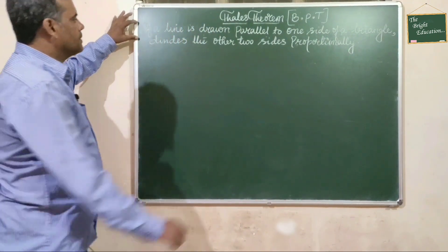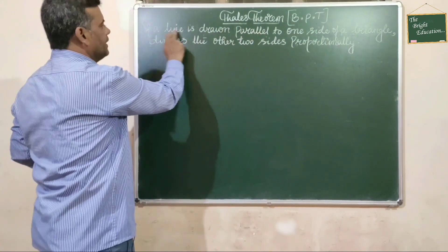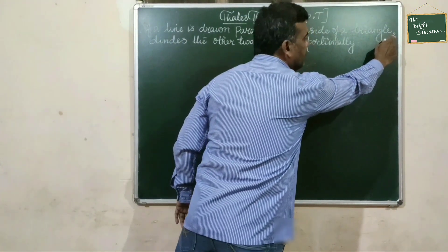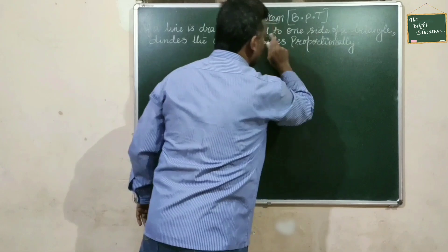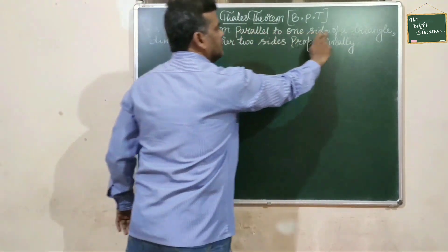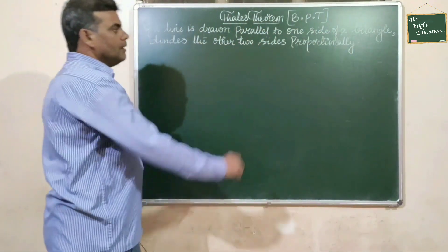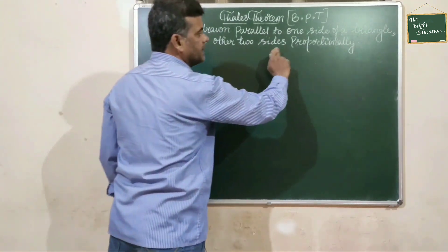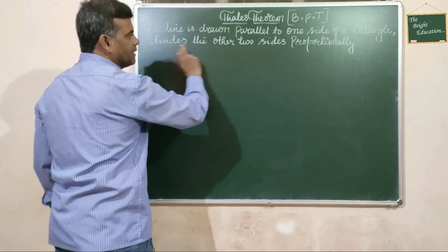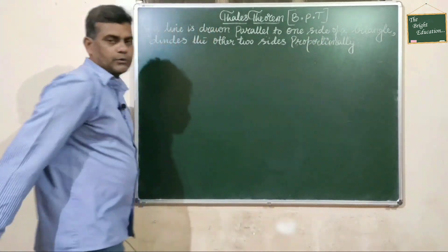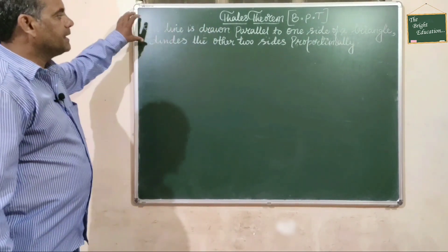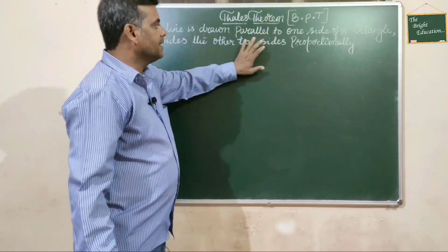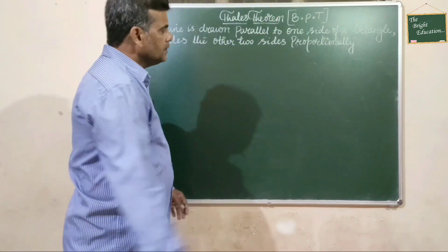Observing this statement, if a line is drawn parallel to one side of a triangle — before the comma, this is known as the assumption. After the comma, it reads: divides the other two sides proportionally — this part after the comma is called the conclusion. So a statement consists of two parts: one is assumption, another is conclusion.